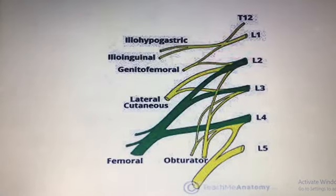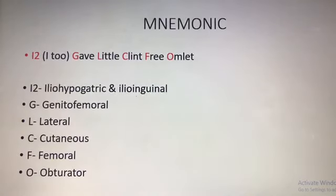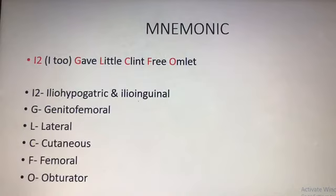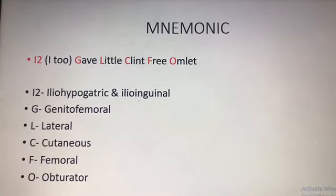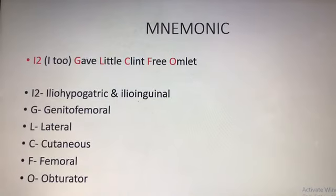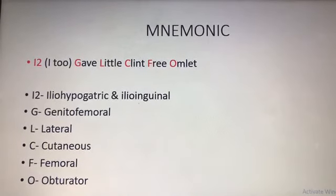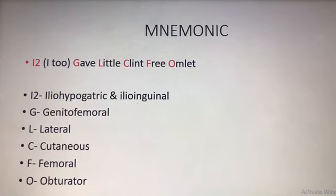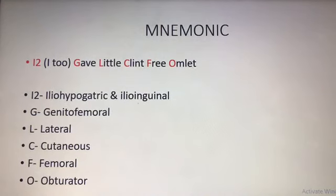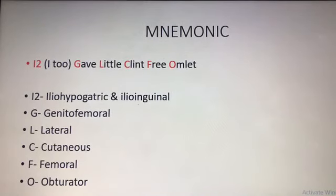The mnemonic for the branches is: I too gave little clint free omelette. The first letters of each word provide the expansion — 'I too' stands for iliohypogastric and ilioinguinal, G from 'gave' for genitofemoral, L from 'little' for lateral, C from 'clint' for cutaneous, F from 'free' for femoral, and O from 'omelette' for obturator.